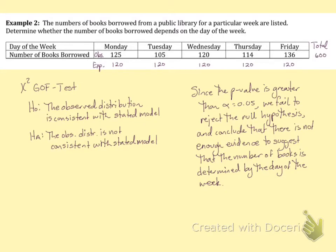If you have the TI-83, I'm going to walk through how to find the chi-squared statistic and the p-value for a goodness-of-fit test. This is the same problem as the previous video, so I left up the information that stays the same. Our whole setup is exactly the same.